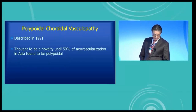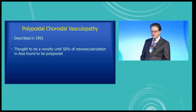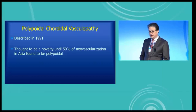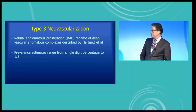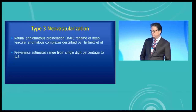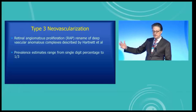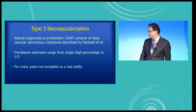Polypoidal choroidal vasculopathy was described by our group, principally by Dr. Larry Yannuzzi, in 1991. We first saw it in older white ladies and thought it was a novelty. Fellows from Japan went back and found that 50% of the neovascularization in Japan and Asia was really polypoidal. This was not included in the AREDS classification either. Type 3 neovascularization was originally described by Emmy Hartnett — she called it deep retinal vascular anomalous complexes, then it was called RAP, and then finally type 3 neovascularization. It's a newer kind of neovascularization where blood vessels grow from the retina down, create a PED, there's telangiectasis of the retinal blood vessels, hemorrhages, and leakage into the retina. Initially it's not choroidal neovascularization because there's no choroidal component to it.